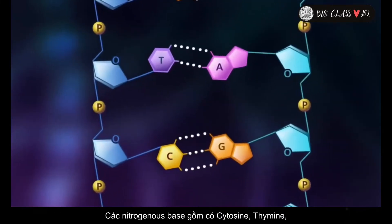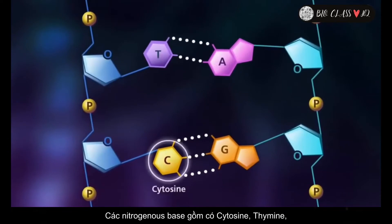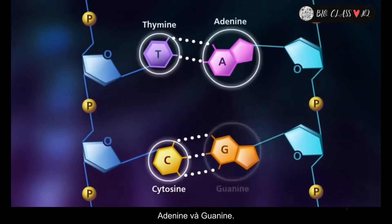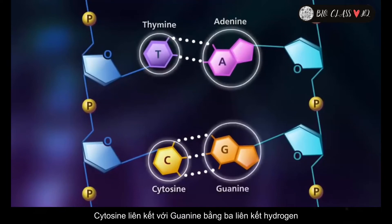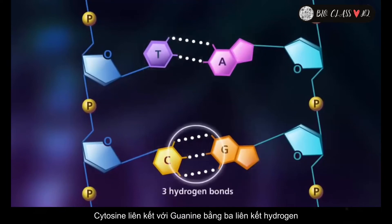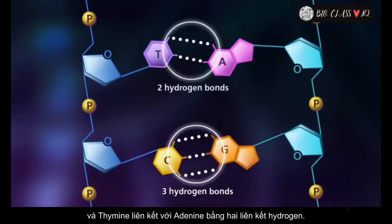The nitrogenous bases include cytosine, thymine, adenine, and guanine. Cytosine forms three hydrogen bonds with guanine, and thymine forms two hydrogen bonds with adenine. This is referred to as complementary base pairing.